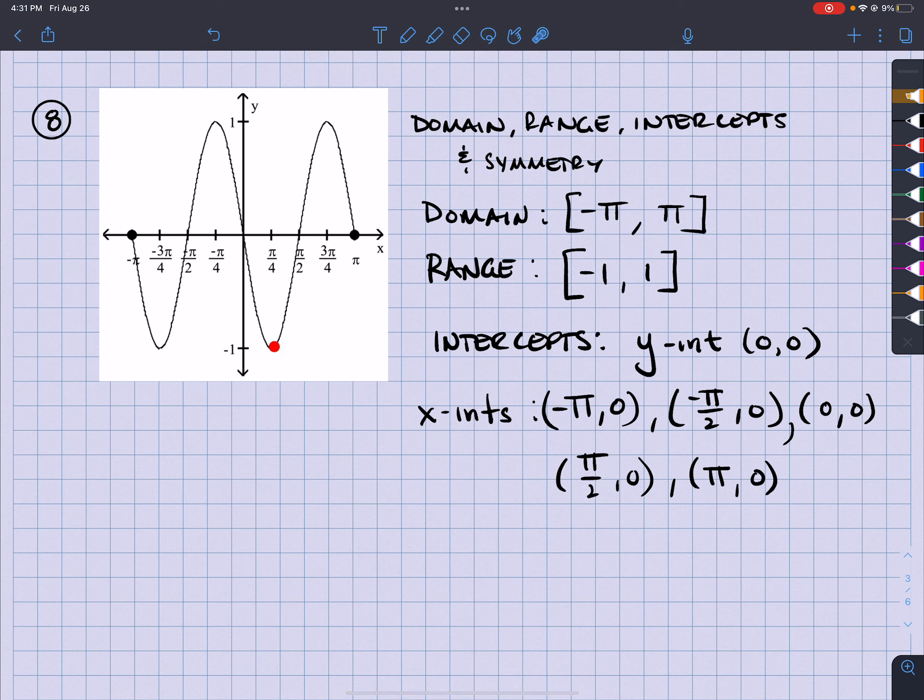However, if I took this point right here, which is positive π fourths and negative 1, if I negate both of them, it would be negative π fourths and positive 1, which there is a point there. So this has symmetry about the origin.